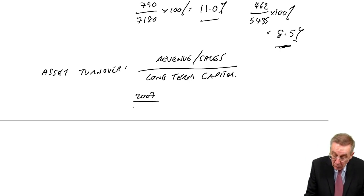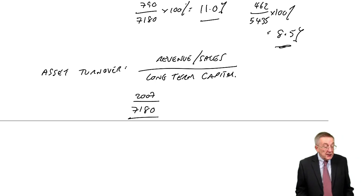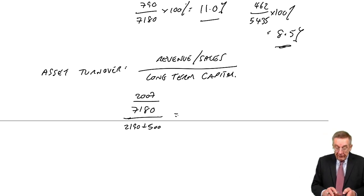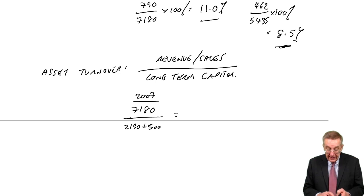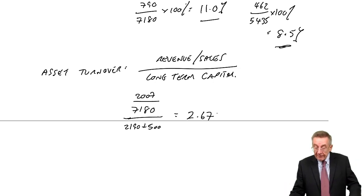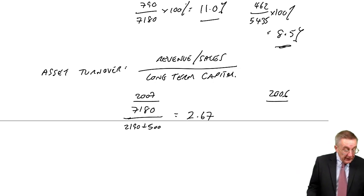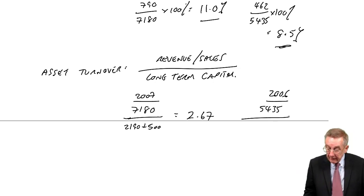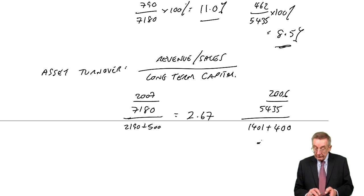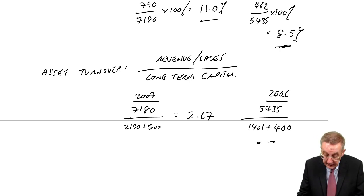In 2007, the revenue was 7180. The total long-term capital we had earlier from shareholders was 2,190. From long-term borrowings was 500 for non-current liabilities. And so, 7180 divided by 2,690 comes to 2.67. So our sales were 2.67 times what you might call the size of the company. What about 2006? Revenue was smaller at 5,435, but the company was smaller. The total long-term finance, equity, share was 1401, long-term borrowing 400. Let's divide that through. I get 3.02.